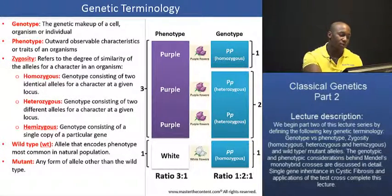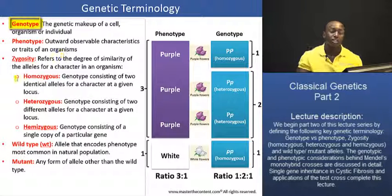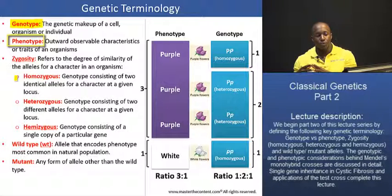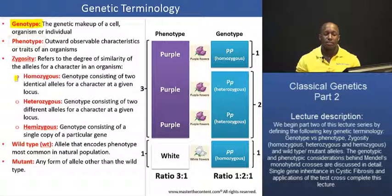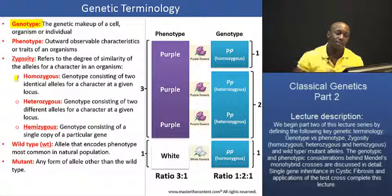I want us to define a few important genetic terminology, because these are terms I'm going to be using fairly frequently. Genotype basically refers to the genetic makeup of a cell, an organism, or an individual. The phenotype, on the other hand, is the outward observable characteristics or traits of an organism. For example, in the case of the garden pea plant, the phenotype would be the flower color — that's the outwardly observable characteristic. The genotype would be the alleles that actually determine that flower color.